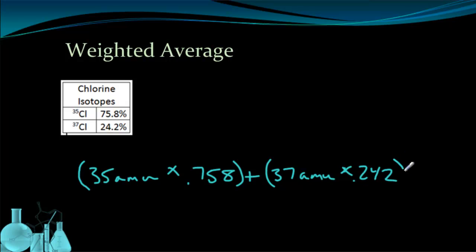Again, I'm changing that to a decimal, so 0.242, and I'm going to find out that my average mass of chlorine, of all chlorine atoms, is 35.45 AMUs.